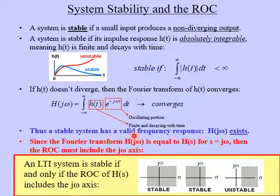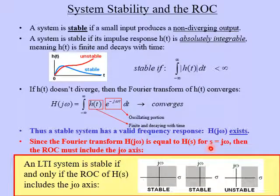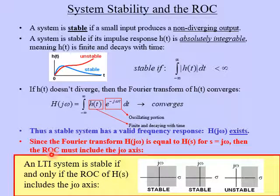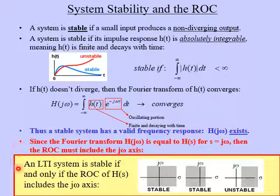So a stable system has a valid frequency response — H of j-omega exists. Now remember that the Fourier transform H of j-omega is the same as H of S, the transfer function, for the special case where S equals j-omega, meaning sigma equals zero. So in order for this to exist, the region of convergence must include the j-omega axis. Putting it all together: an LTI system is stable if and only if the region of convergence of the transfer function H of S includes the j-omega axis.